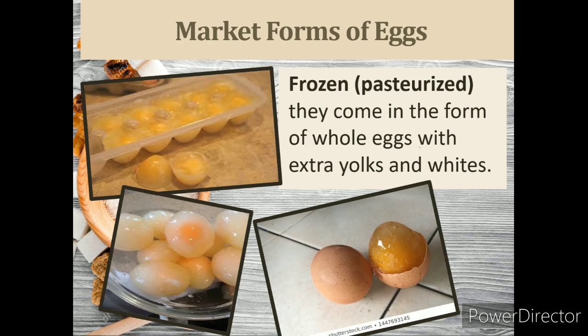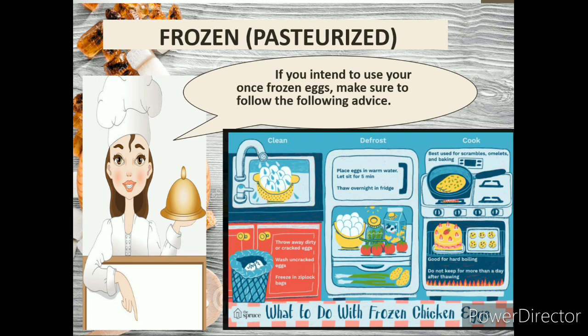Frozen pasteurized eggs come in the form of whole eggs with extra yolks and whites. The United States Department of Agriculture says you should not intentionally freeze eggs. Shell eggs should not be frozen. If an egg accidentally freezes and the shell cracks during freezing, discard the egg. Keep any uncracked eggs frozen until needed. Then thaw in the refrigerator. If you intend to use your once-frozen eggs, make sure to follow this advice: clean, defrost or thaw, then cook.